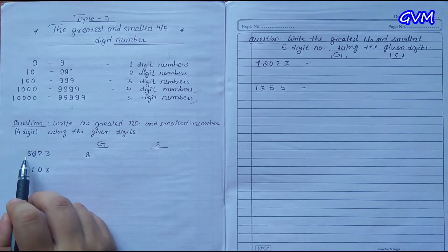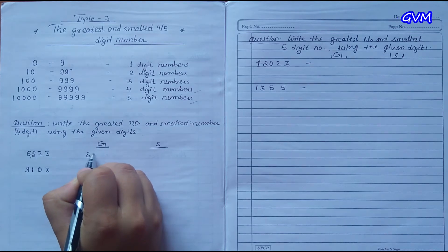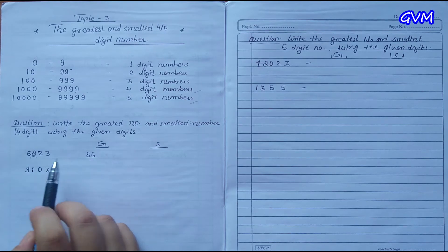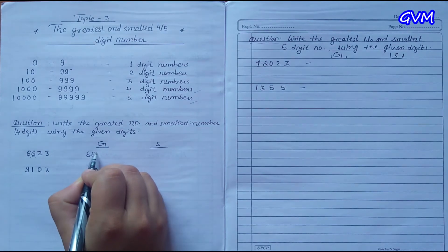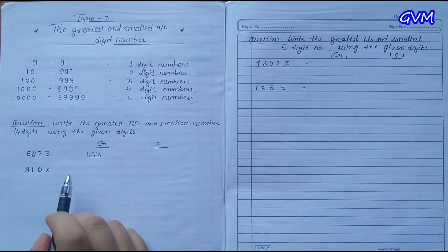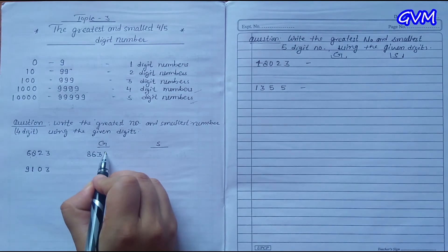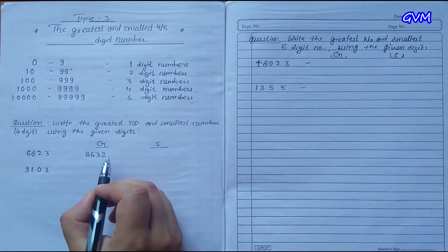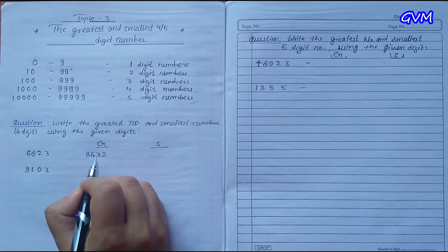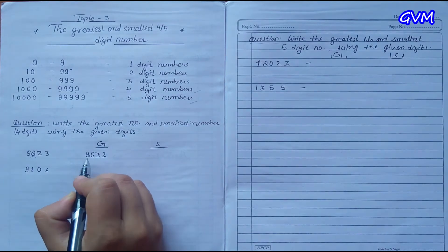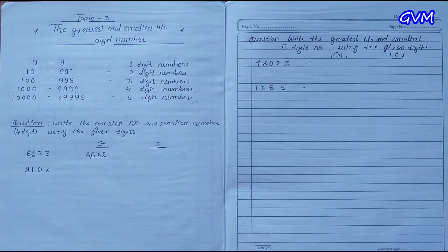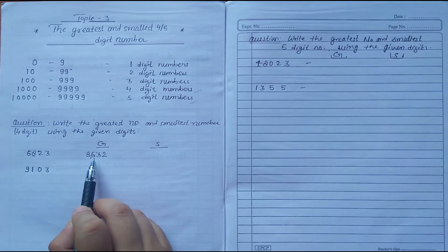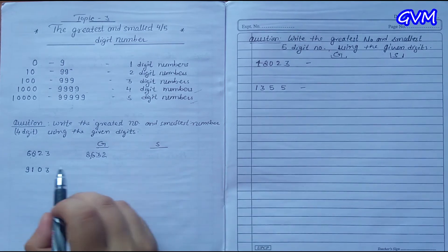The biggest number is 8, so we write 8 first. The second biggest number is 6. Then the third greatest is 3, and after that 2. Now we have created the greatest number. Put a comma after three digits, so this number is 8,632.